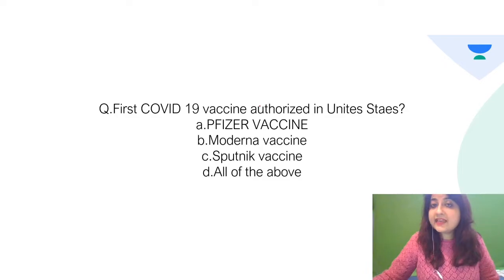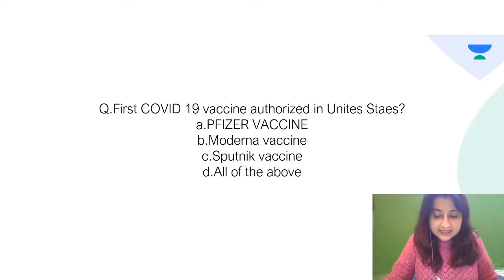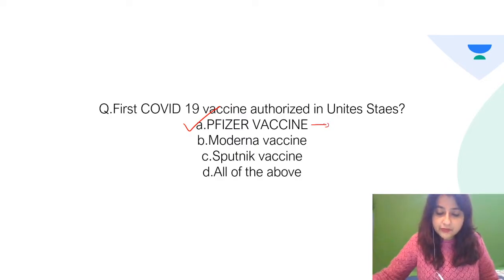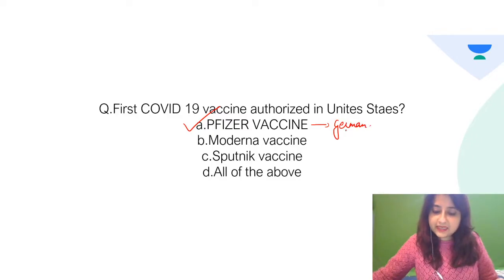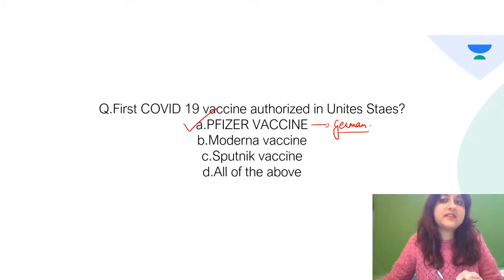The first COVID-19 vaccine authorized in the United States was the Pfizer-BioNTech vaccine. The Pfizer-BioNTech vaccine was developed by Pfizer in collaboration with a German biotech firm. So Sputnik was developed in Russia, while Pfizer-BioNTech was the first to be authorized in the US.